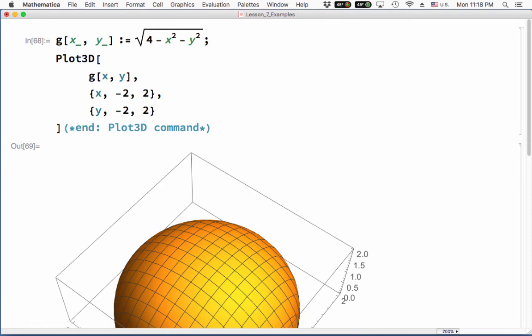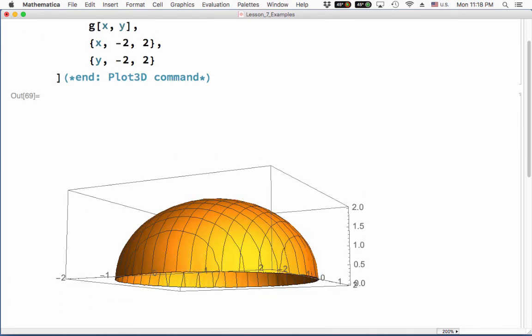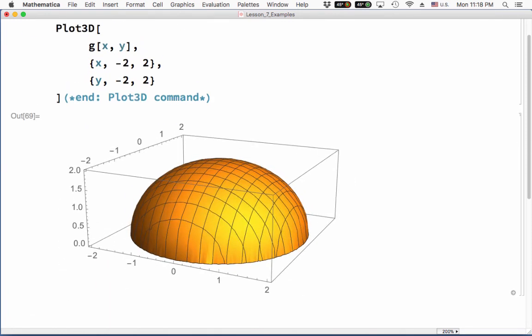Yep, that looks about right. Because indeed, if you were to take the square onto the other side, this would be a hemisphere.